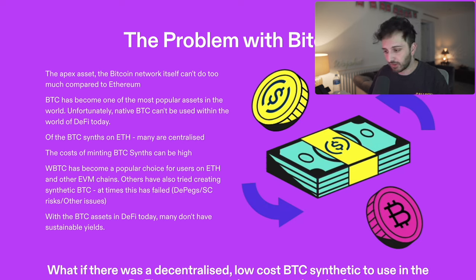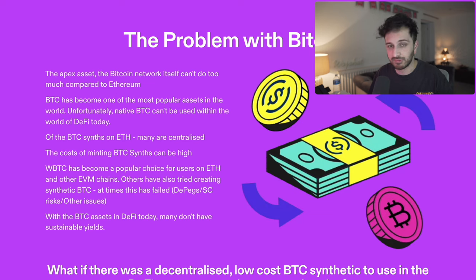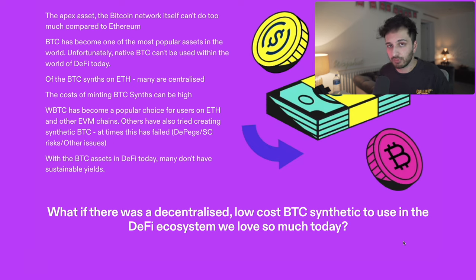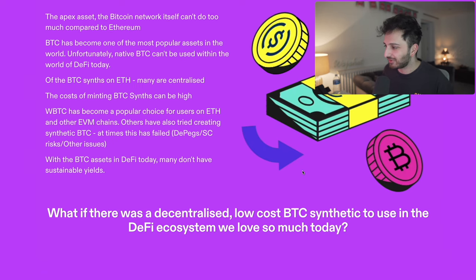The last point on the problem with Bitcoin in DeFi is that with the Bitcoin assets we have today, many of them don't have yields — they don't have sustainable yields, they don't have anything to keep them going. You can have governance tokens to bootstrap and incentivize things, but ultimately that's not very sustainable. So the question I'm posing here is: what if there was a decentralized, low-cost BTC synthetic asset that you can use in the DeFi ecosystem that we all love? Potentially there is — it's called EBTC.